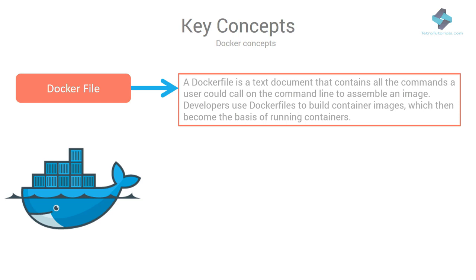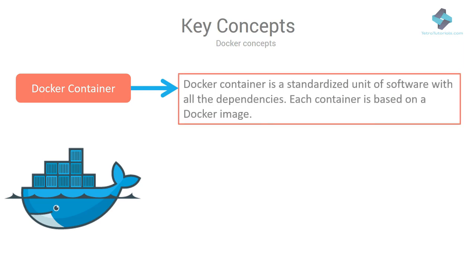A Dockerfile is a text document that contains all the commands a user could call on the command line to assemble an image. Developers use Dockerfiles to build container images, which then become the basis of running containers. The Dockerfile contains all the configuration information and commands needed to assemble a container image, and with it the Docker daemon can automatically build a container image, greatly simplifying the steps for container creation.